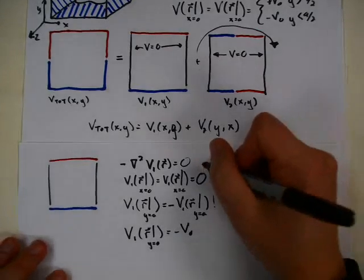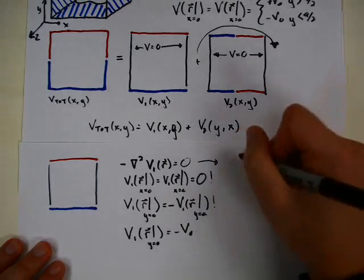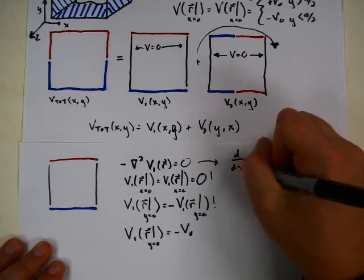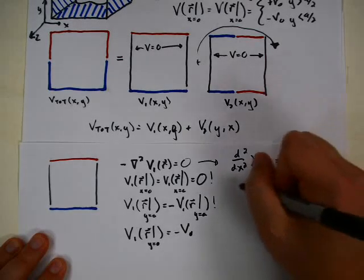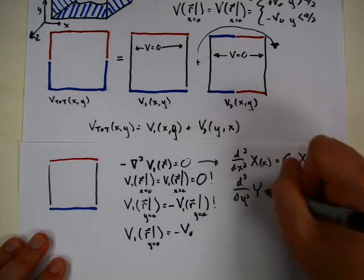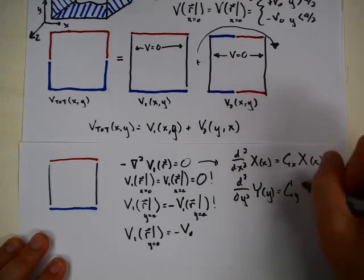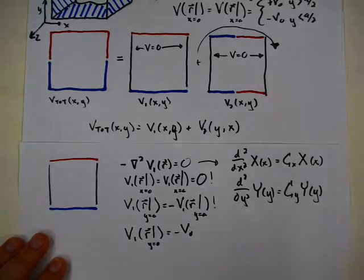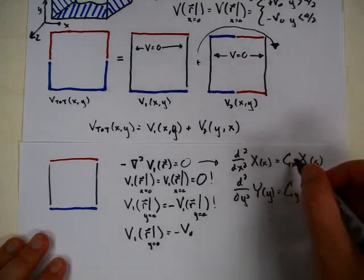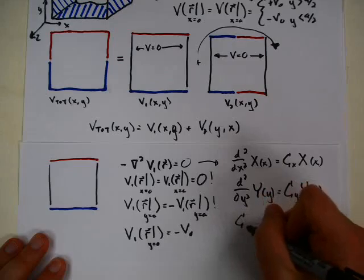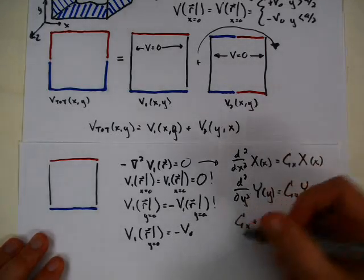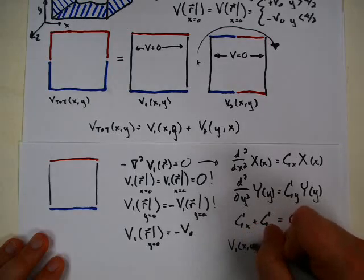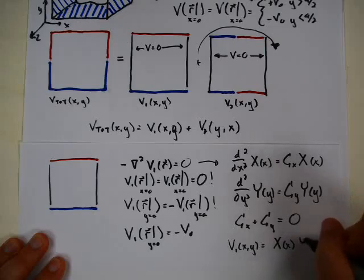We do separation of variables, which gives us two ODEs. The Laplacian turns into two parts with separation constants CX and CY, which are not independent — they satisfy CX plus CY equals zero, or equivalently CX equals minus CY. The assumption is that V1(X,Y) can be written as the product X(X) times Y(Y).